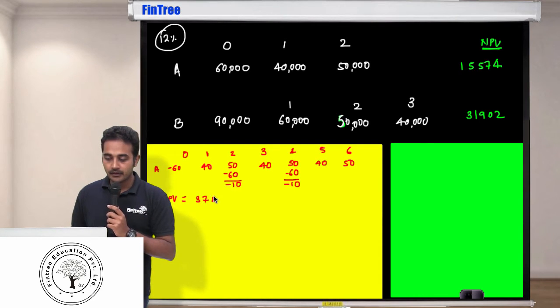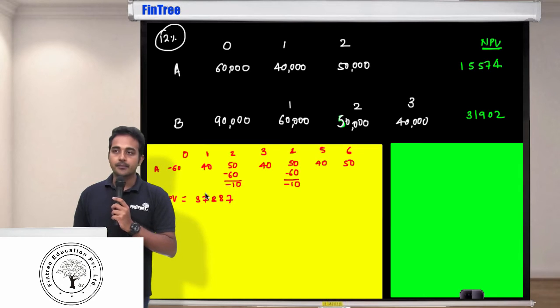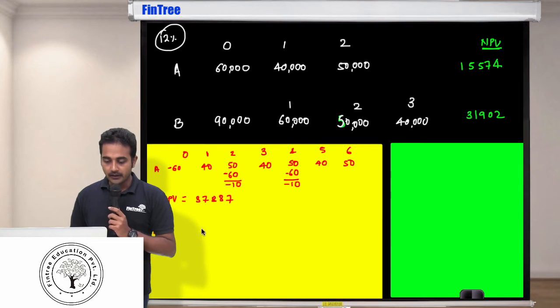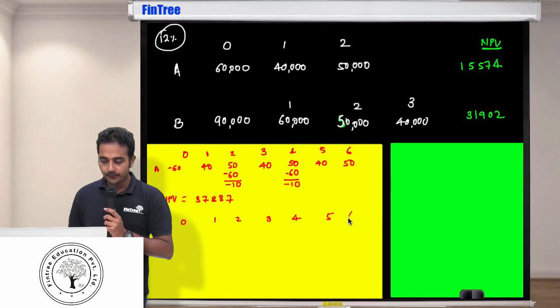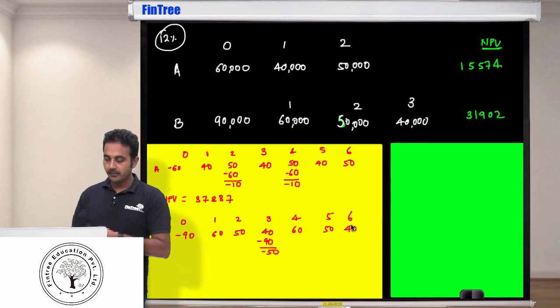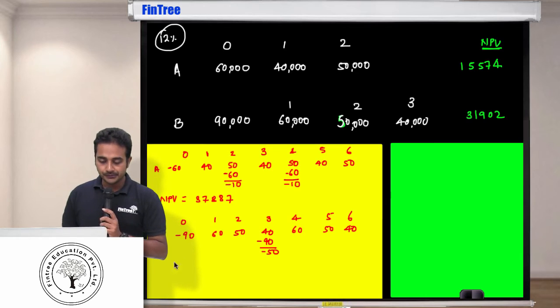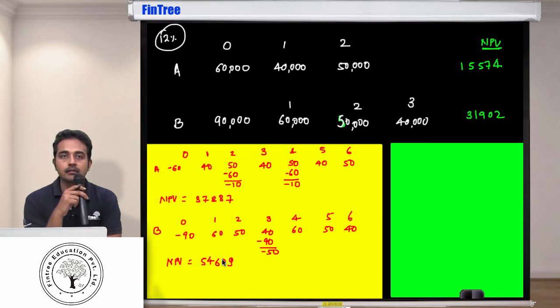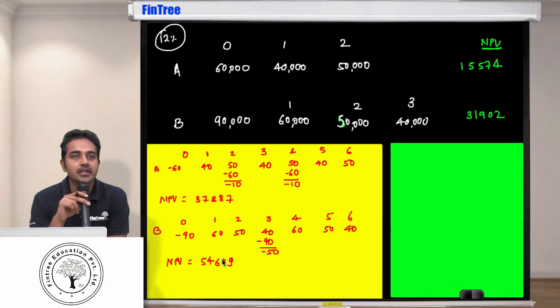Now for project B, the cash flows would be like this. Timeline 0, 1, 2, 3, 4, 5, 6. You will invest 90 here, then you will get 60, 50, 40, minus 90, so that's net minus 50. Again you would get 60, 50, and 40. Your NPV will come out to be 54,609. So based on LCM method, project B appears to be a smarter project.